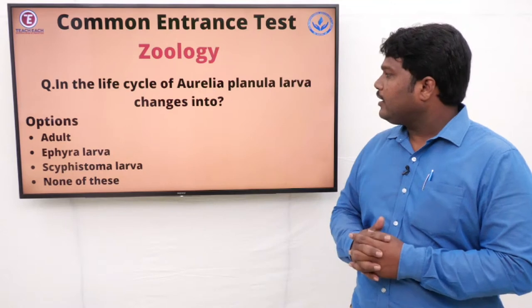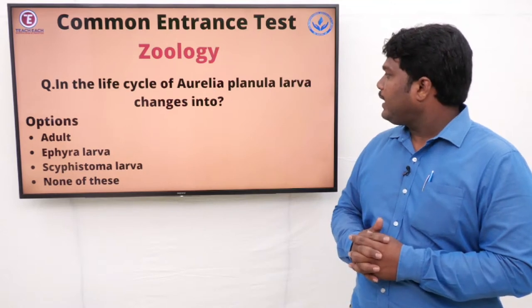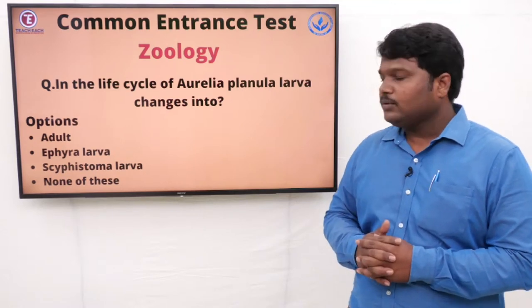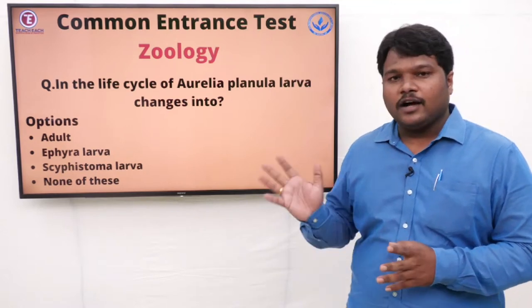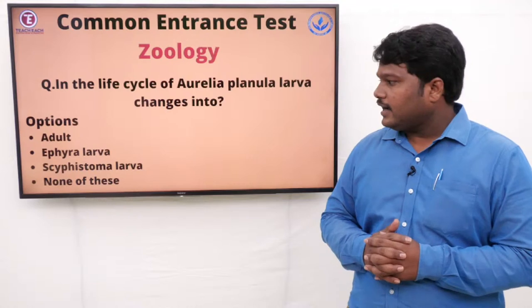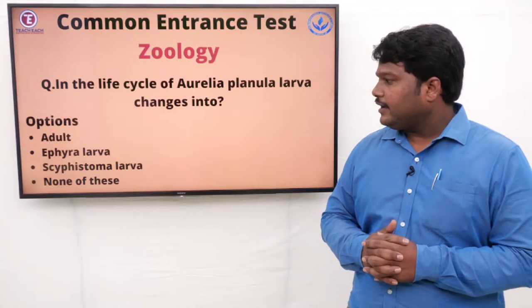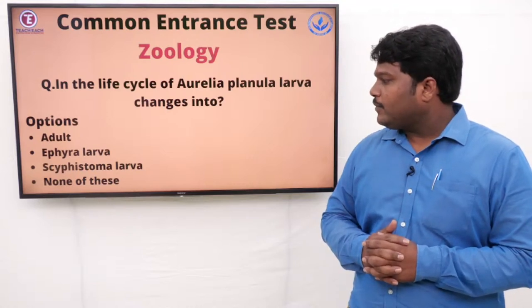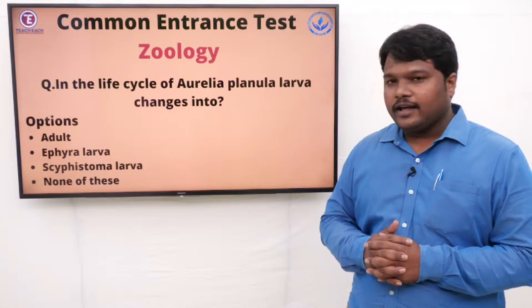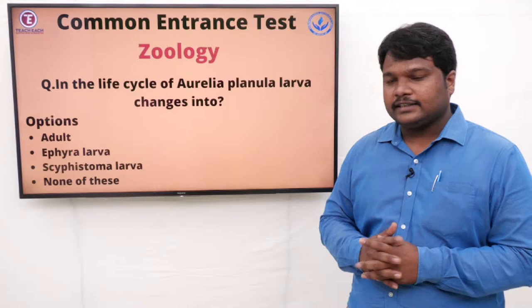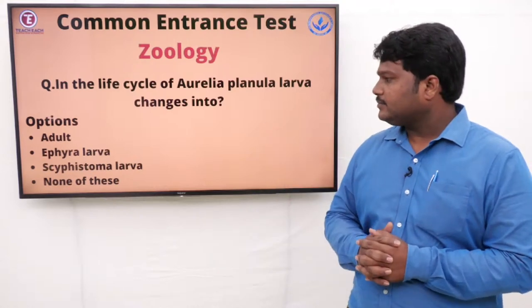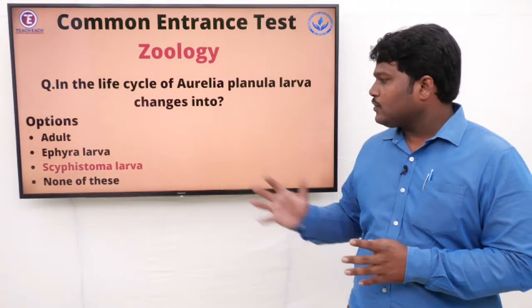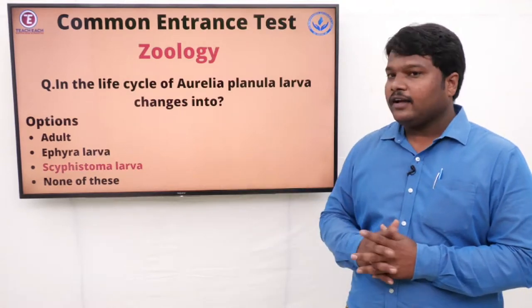Question 13: In the life cycle of Aurelia, planula larva changes into. Options: A) Adult, B) Ephyra larva, C) Scyphistoma larva, D) None of these. The right answer is Scyphistoma larva.